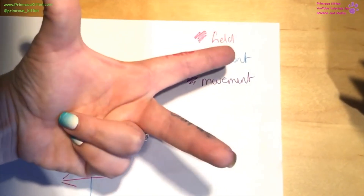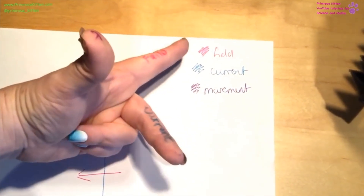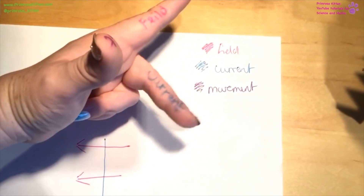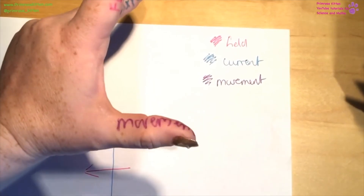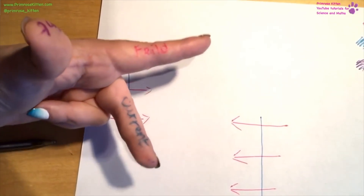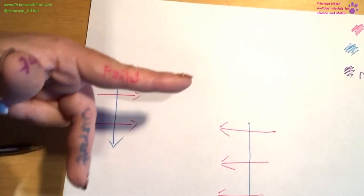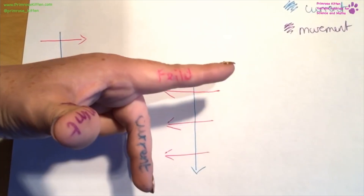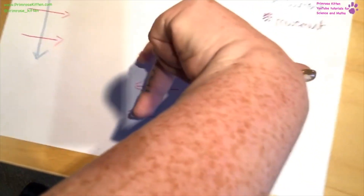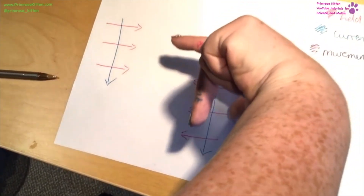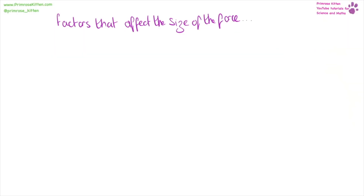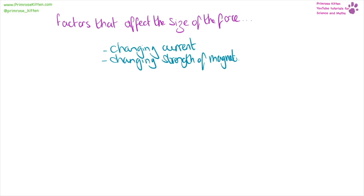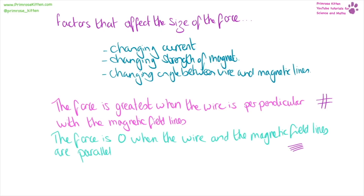For Fleming's left hand rule, make your left hand with your first finger pointing out, thumb up, and middle finger out. Your first finger is the magnetic field, your middle finger is the current, and your thumb is the movement of the force. In an exam, contort your hand until it fits the right direction. You can change the size of the force by changing the current, the strength of the magnet, or the angle between the wire and the magnetic field lines. The greatest force is when the wire is perpendicular to the field lines; force is zero when they are parallel.